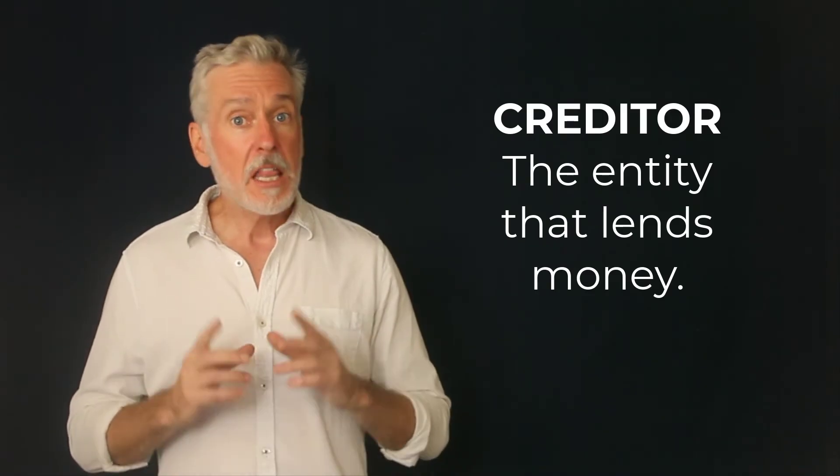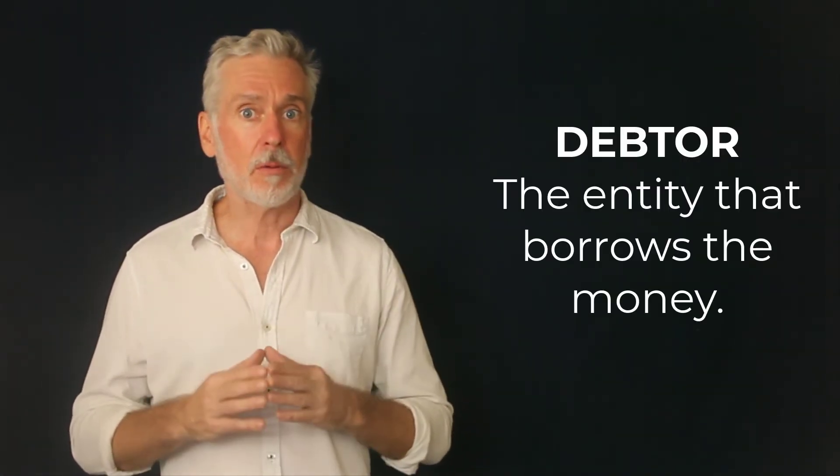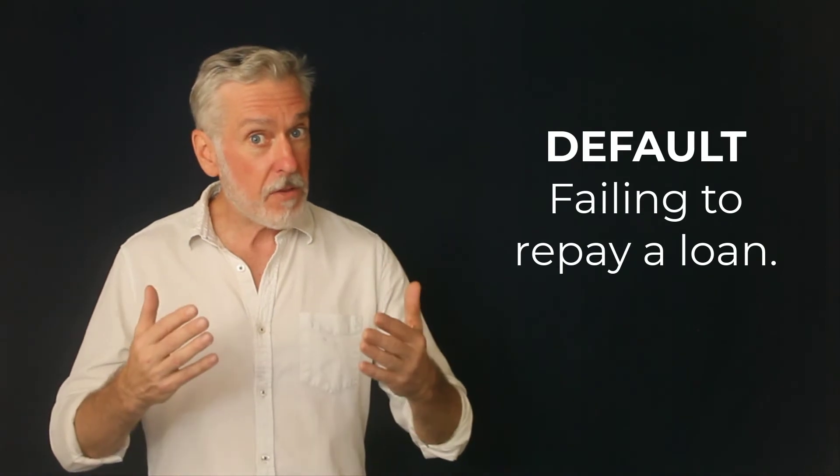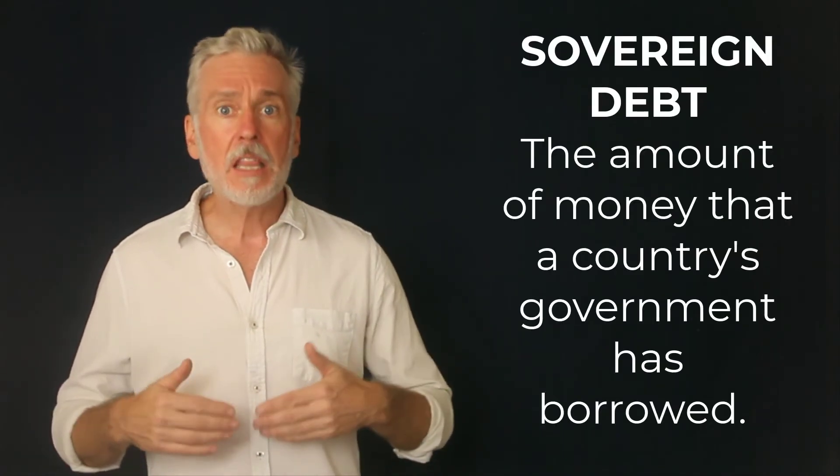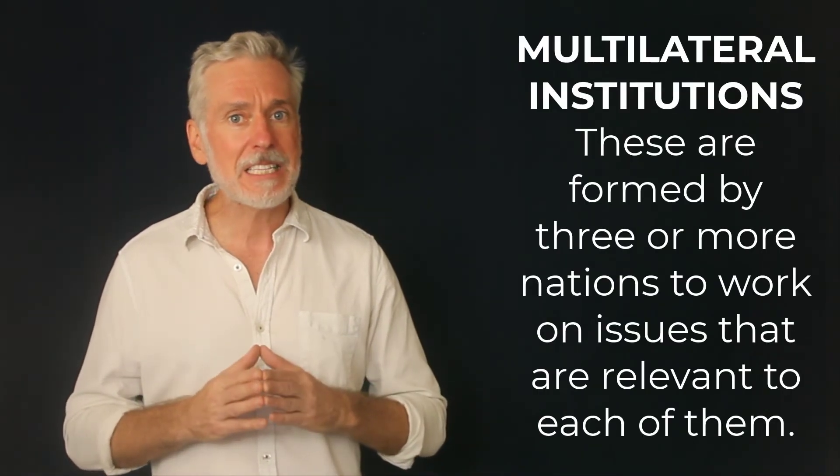Okay, that's it for the text. Let's review the vocabulary one last time. Creditor. The entity that lends money. Debtor. The entity that borrows the money. Default. Failing to repay a loan. Sovereign debt. The amount of money that a country's government has borrowed.